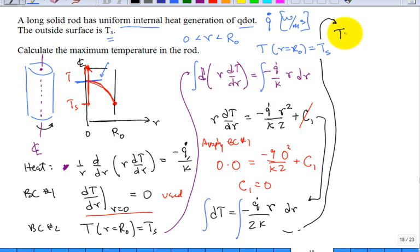So now if I fit it up here, I have T is equal to minus q dot. I'm going to have 1 over the 2 times the 2, so I pick up 4 times k, r squared, plus a new constant. I'll call it c2. It's another constant of integration.